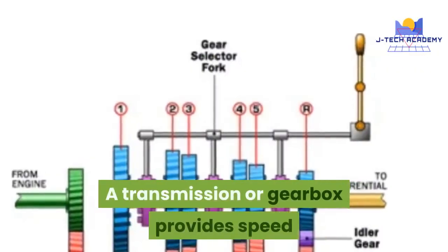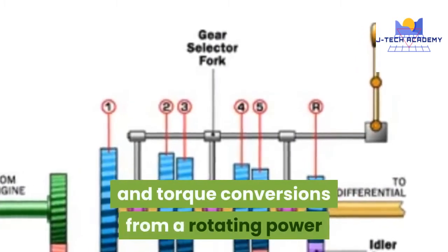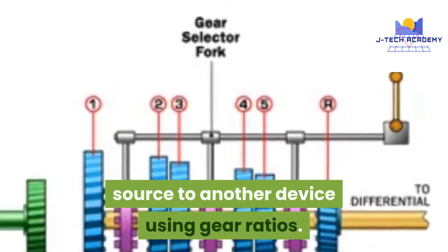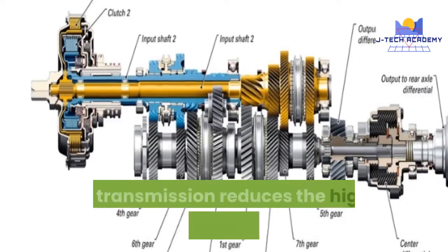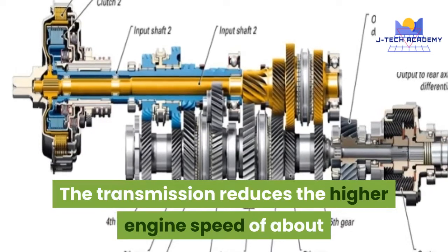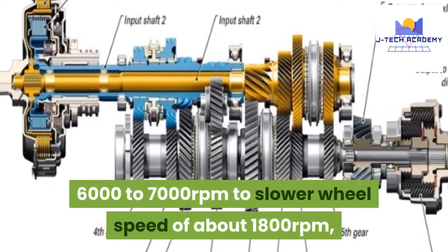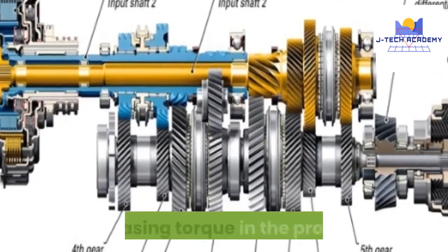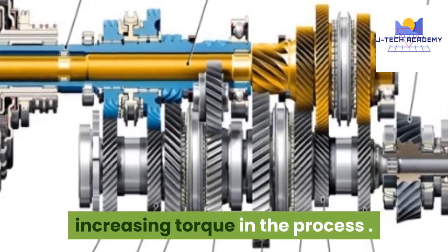A transmission or gearbox provides speed and torque conversions from a rotating power source to another device using gear ratios. The transmission reduces the higher engine speed of about 6,000 to 7,000 revolutions per minute to a slower wheel speed of about 1,800 revolutions per minute, increasing torque in the process.